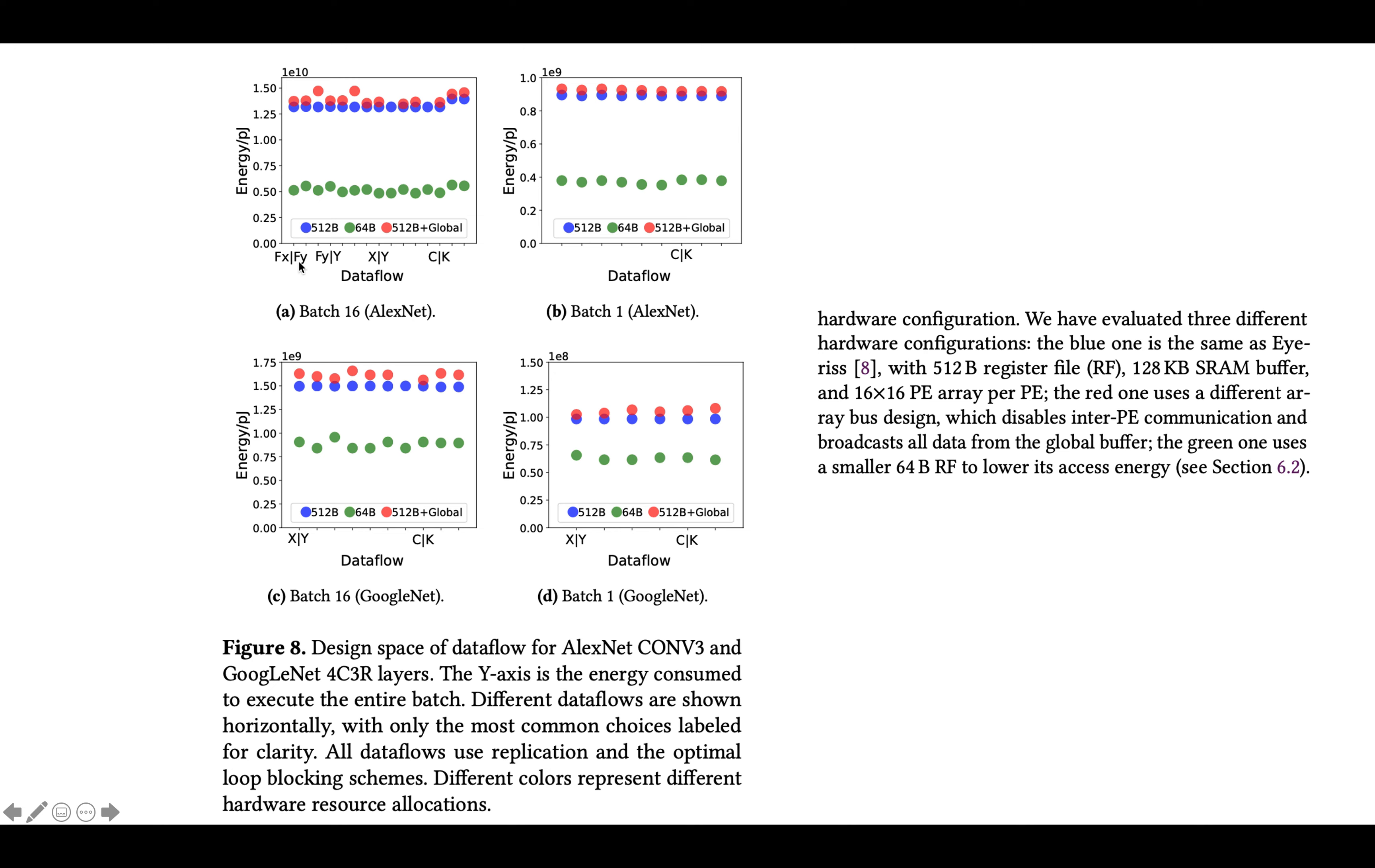on the x-axis we have different data flows, and on the y-axis we have the energy per op in picojoules. So for example, this row is fx and fy are on the systolic array. This is row stationary, output stationary, and so on.